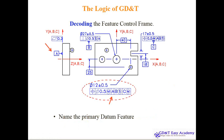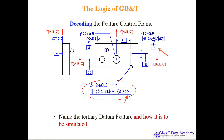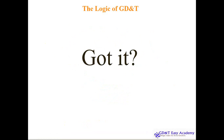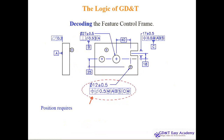This datum reference frame can be interpreted in terms of primary and secondary, and you can simulate it with respect to your gauge and inspection. Now I think you've got the basic logic of GD&T. Let's do it and fill in the data.